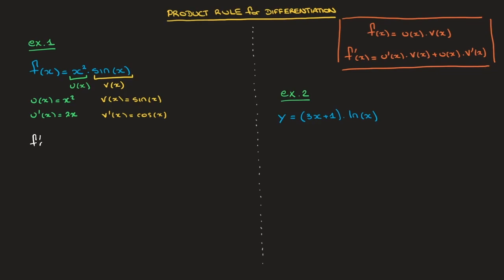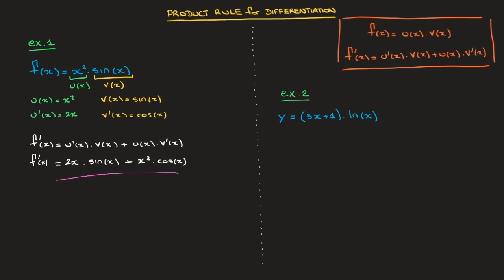Using the product rule, f dash of x equals u dash of x times v of x, plus u of x times v dash of x. Replacing u and v, as well as u dash and v dash, by the functions we have: u dash is 2x, times v of x which is sine of x, plus u of x which is x squared, times v dash of x which is cosine of x. Since this can't be simplified any further, f dash of x equals 2x times sine of x plus x squared times cosine of x.